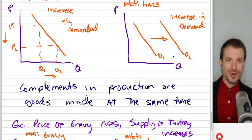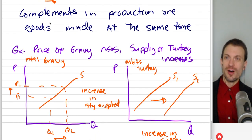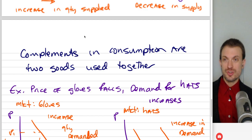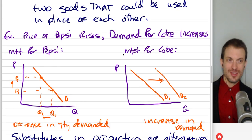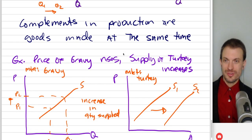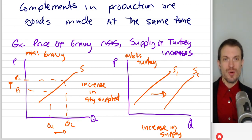I really wanted to use socks and sandals as an example, but most people in the United States think that's unusual — though I understand it to be different in Europe. Complements in production are goods made at the same time. So if the price of gravy rises, the supply of turkey might increase.